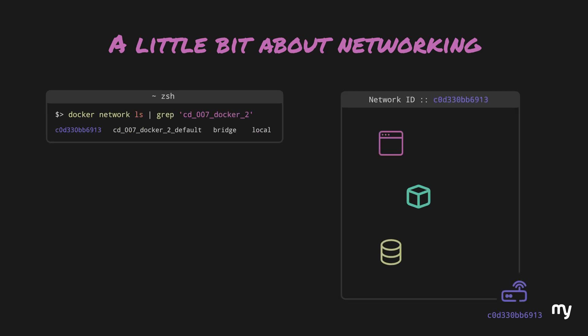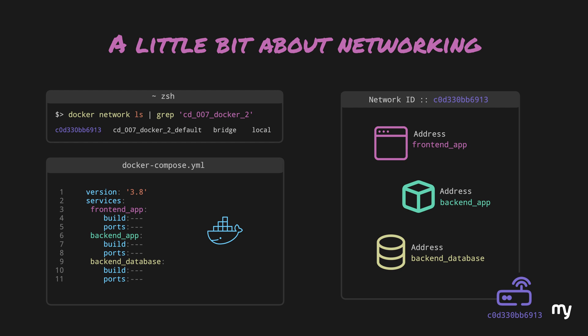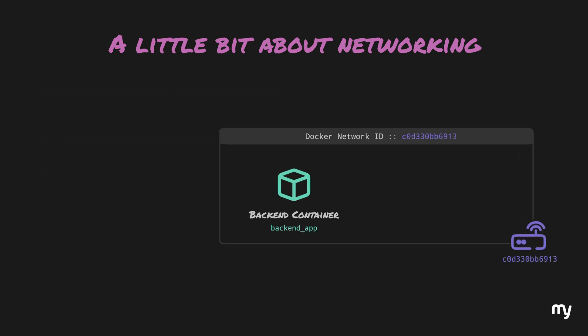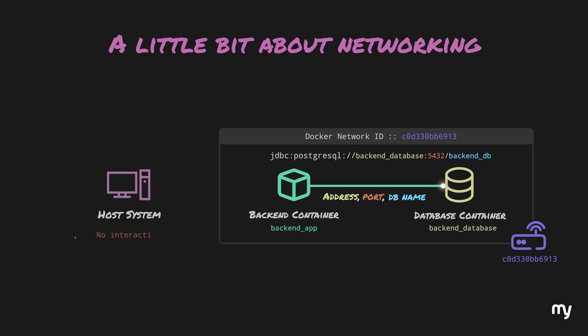When we run Docker Compose, Docker creates a network and assigns an address to each container. The address is simply the container name as specified in the services block of the Docker Compose file. Therefore each container knows the address of other containers, making communication much easier. The backend needs to talk to the database, which requires knowing the address, port, and database name — typically supplied as a connection string.